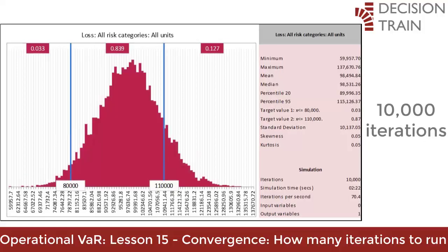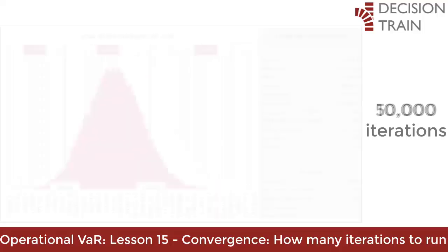With 10,000 iterations, the process would show a much smoother and more convergent histogram. However, there comes a time when as the number of iterations increases, the smoothness of the histogram or the convergence does not necessarily increase significantly. Take a look at the simulated histogram after 50,000 iterations.